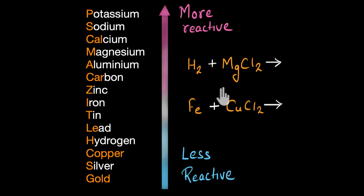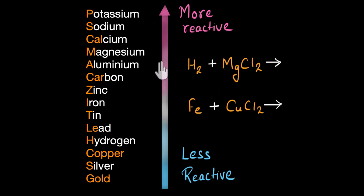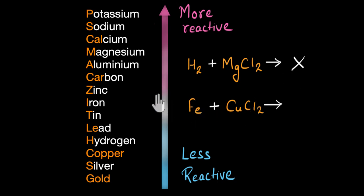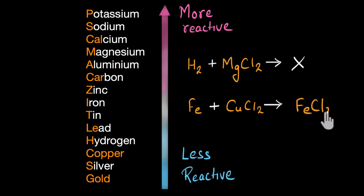Here I have two reactions. In the first, hydrogen is reacting with magnesium chloride. Magnesium is higher up in the reactivity series than hydrogen, meaning magnesium is more reactive and hydrogen cannot displace it — this reaction will not proceed. In the second reaction, iron reacts with copper chloride. Copper is lower than iron in the series, so iron is more reactive and can displace copper from its chloride. The products are iron chloride and displaced copper.